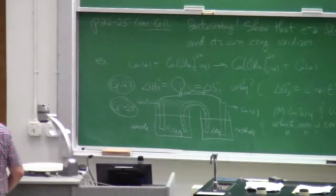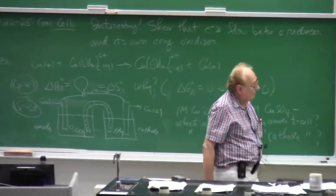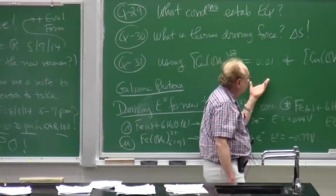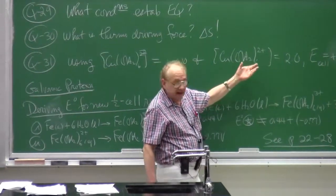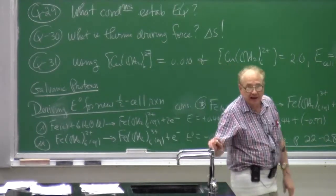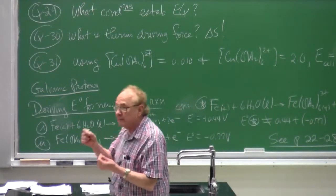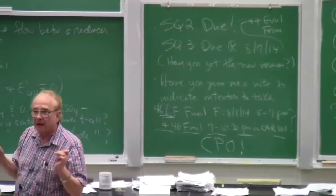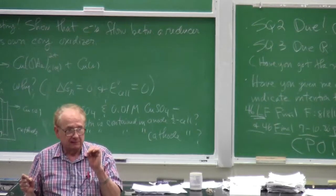If I have hundredth molar copper ion in my anode compartment and 2.0 molar copper ion in my cathode compartment, under these conditions E cell is +0.097 volts, keeping in mind that E0 is zero. So the only terms that matter in calculating the electrochemical potential for a concentration cell are the Q terms and N in the denominator.